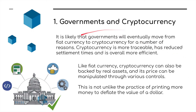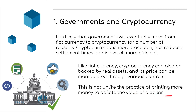It is likely that governments will eventually move from fiat currency — notes and coins — to cryptocurrency for a number of reasons. Cryptocurrency is more traceable, has reduced settlement times, and is overall more effective. Like fiat currency, cryptocurrency can also be backed by real assets, and its price can be manipulated through various controls. This is not unlike the practice of printing more money to deflate the value of the dollar, for example.